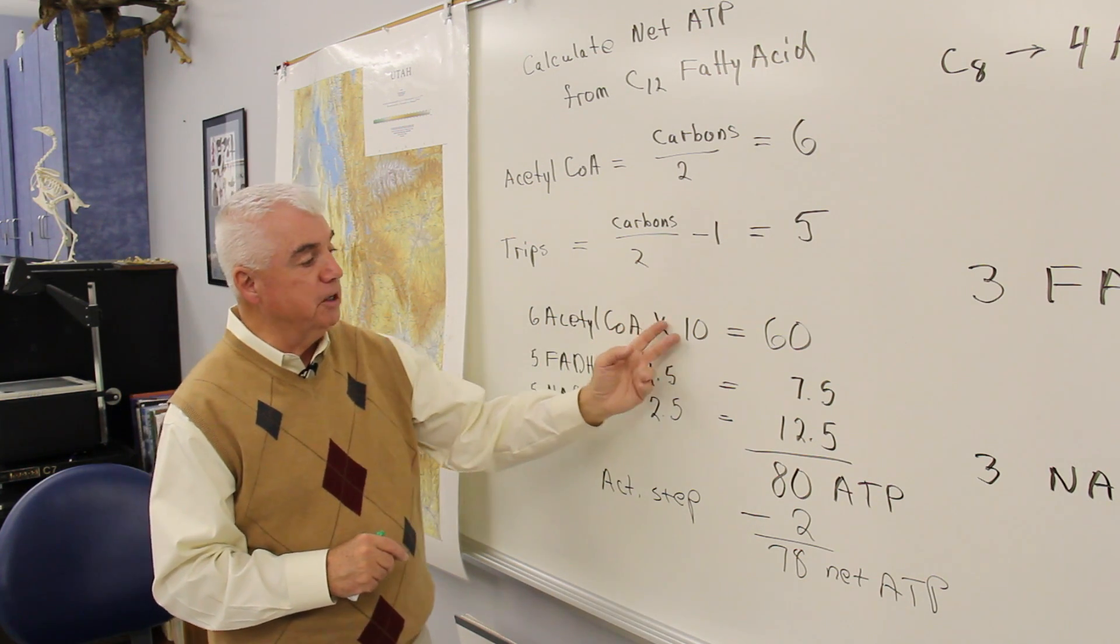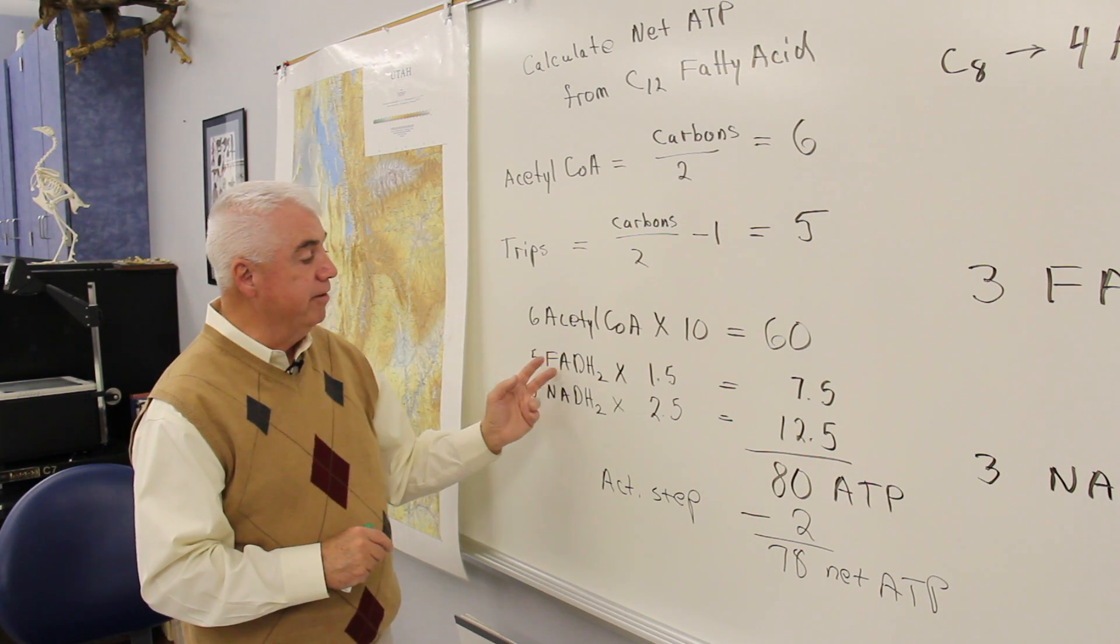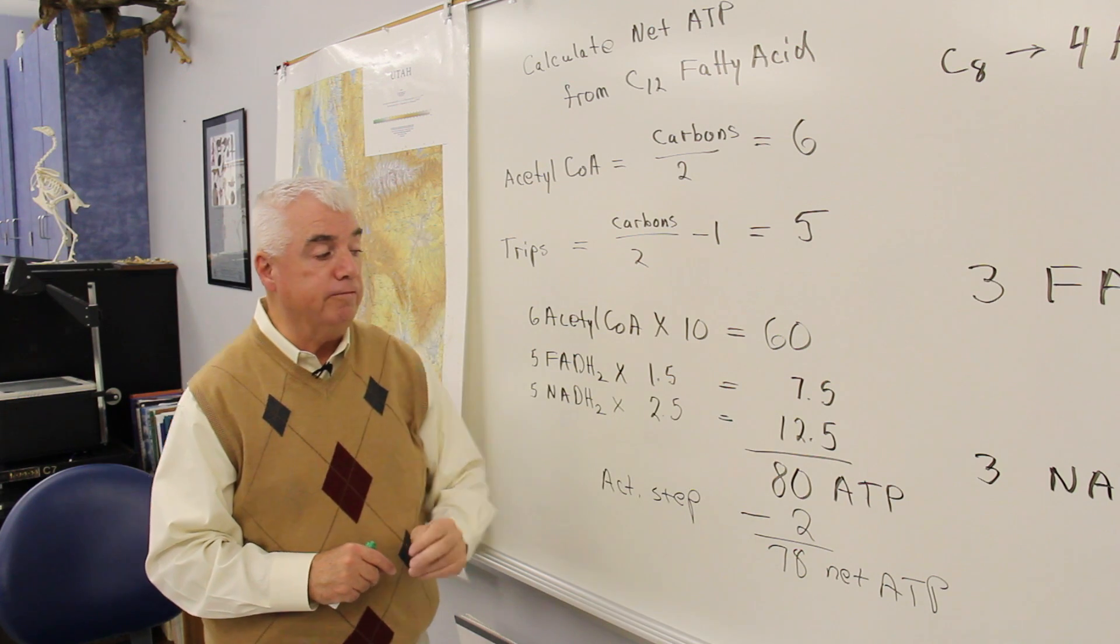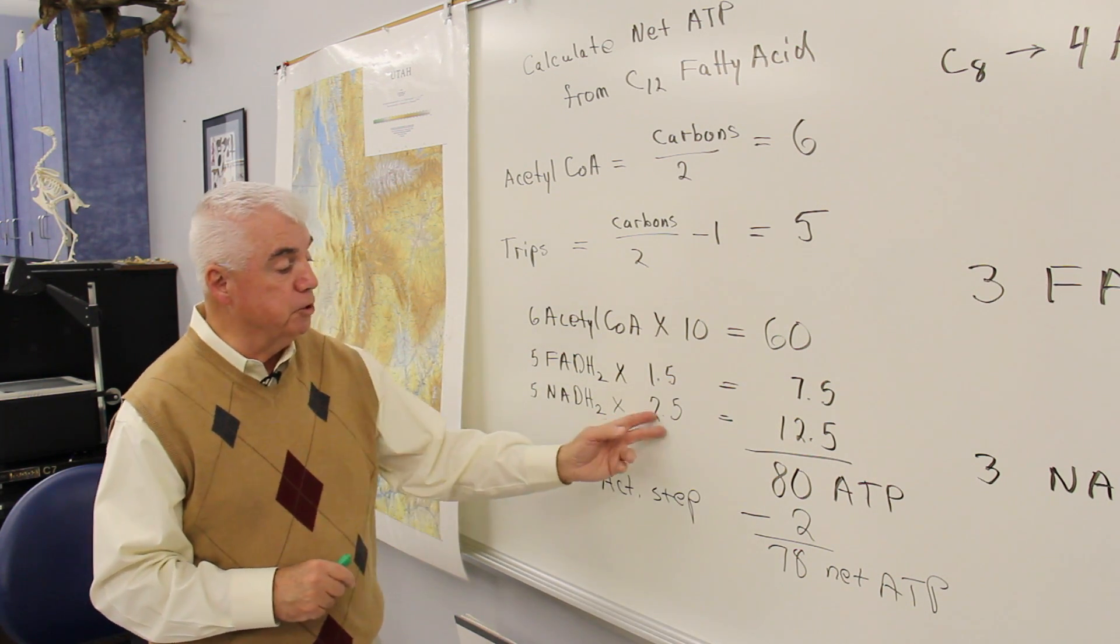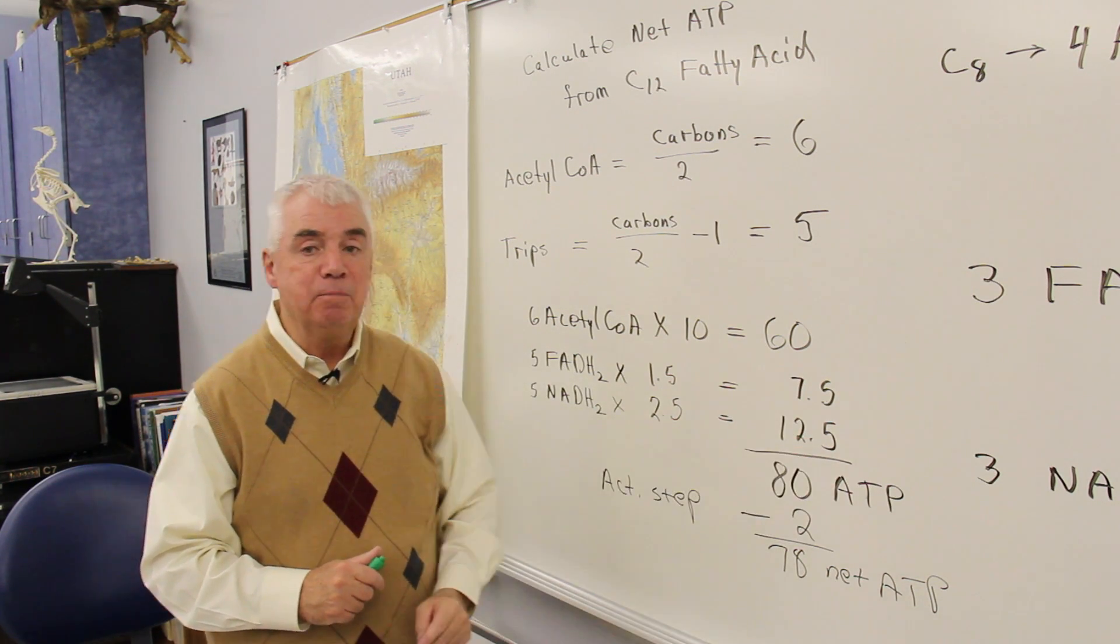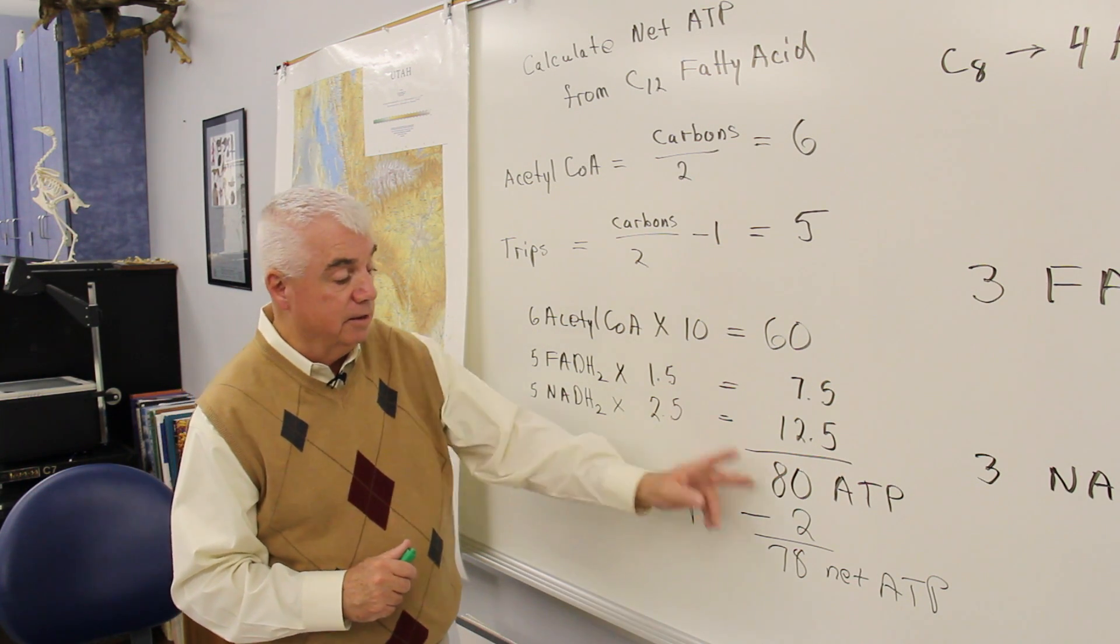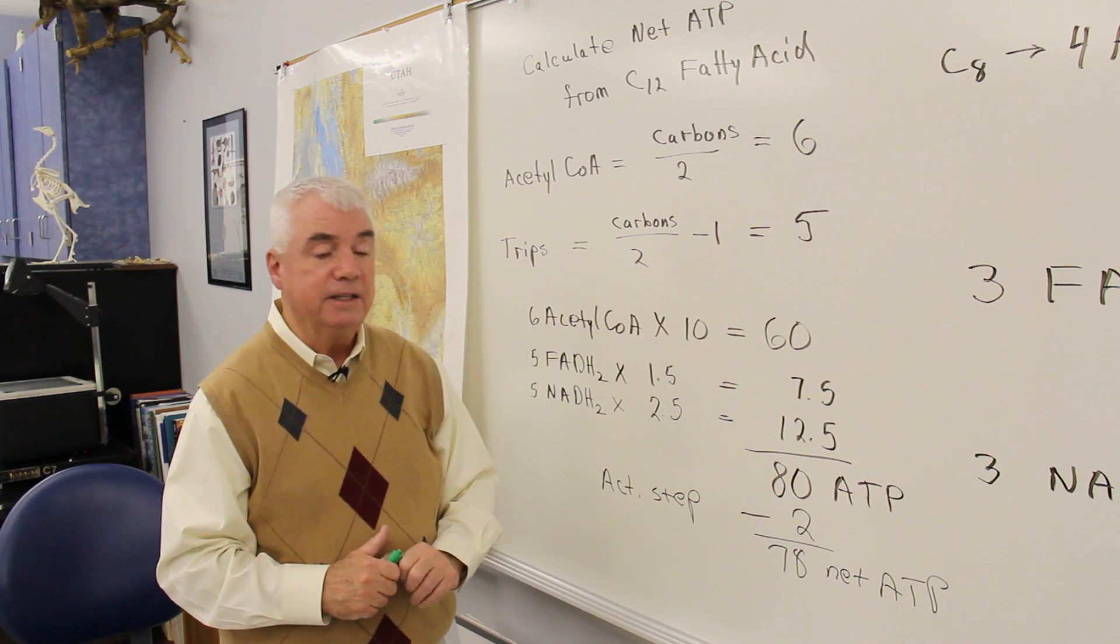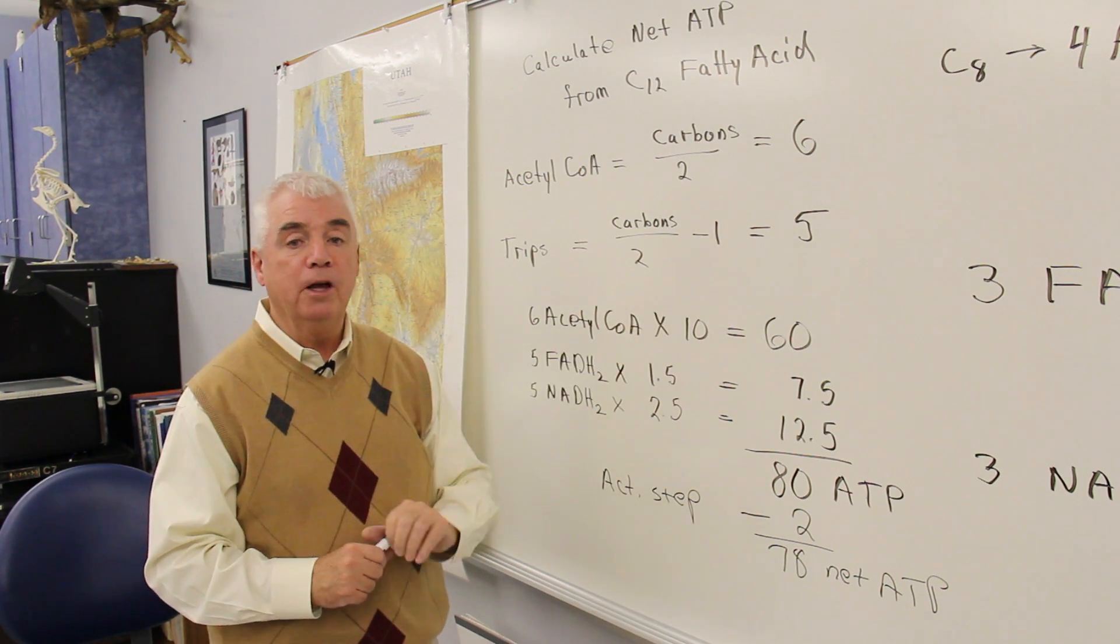So six units of acetyl-CoA times 10 is 60, five FADHs times 1.5 is 7.5 ATPs, five NADH2s times 2.5 is 12.5, would get a total of 80 ATPs. And it took us two to prime the pump. So the net is 78 ATPs. Be able to do something like that.